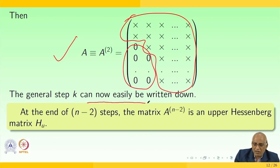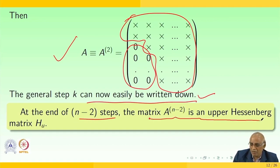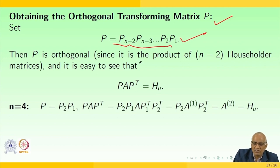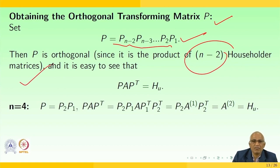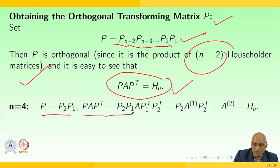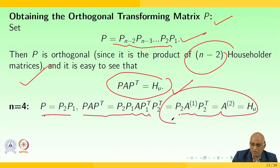The general step K can now be written down. At the end of N-2 steps, matrix A_{N-2} is the upper Hessenberg matrix H_U. To obtain the orthogonal transformation matrix P, set P = P_{N-2}·P_{N-3}·...·P₂·P₁; then P is orthogonal since it is the product of N-2 Householder matrices, and P·A·Pᵀ = H_U. For N = 4: P = P₂·P₁, and P·A·Pᵀ = P₂·(P₁·A·P₁ᵀ)·P₂ᵀ = P₂·A₁·P₂ᵀ = A₂ = H_U.